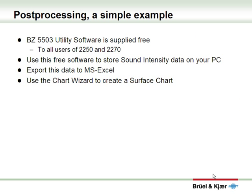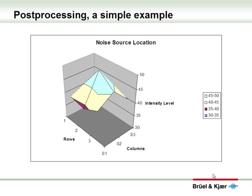Here's how it goes: transfer the data from your instrument into the computer using the utility software, export it to Microsoft Excel, then use the chart wizard in Excel to create a surface chart. On the flat surface at the bottom you'll see the rows and columns, and vertically the decibel scale of sound intensity. The center of the picture has the highest sound levels, as we already knew. This is a simple example of contour plotting, but the BNK software will give more professional results.